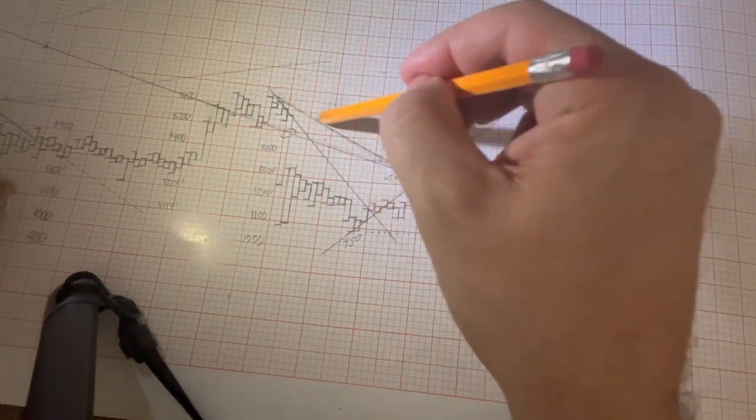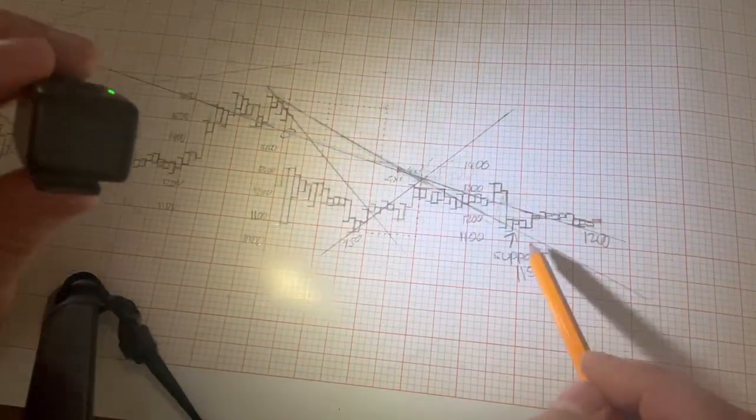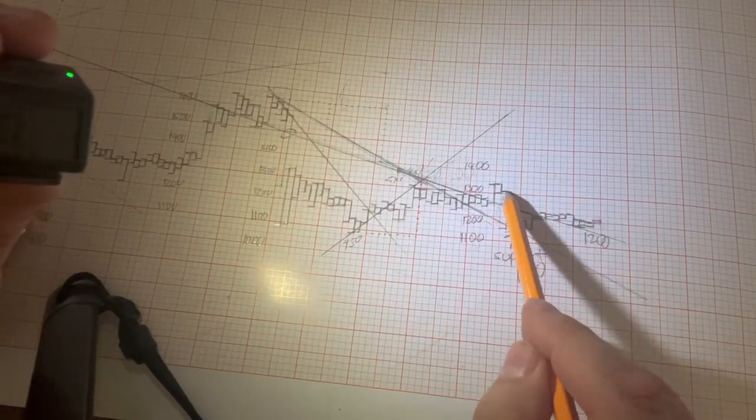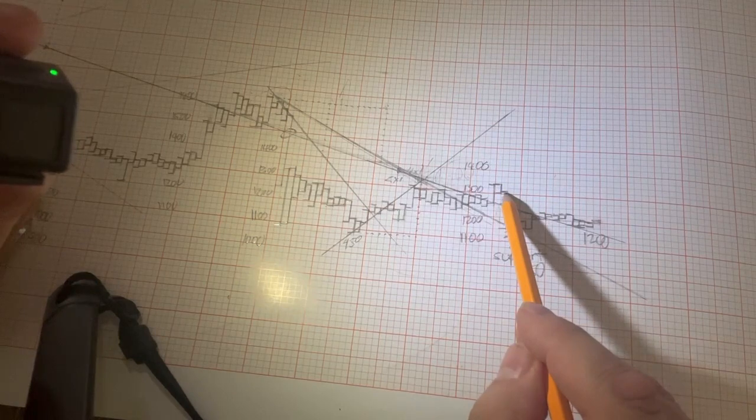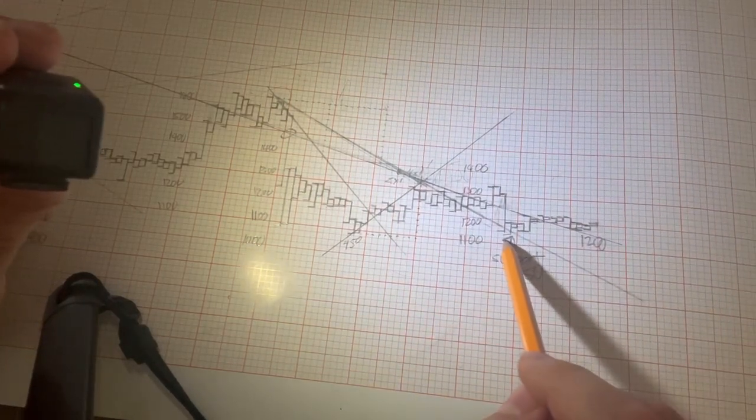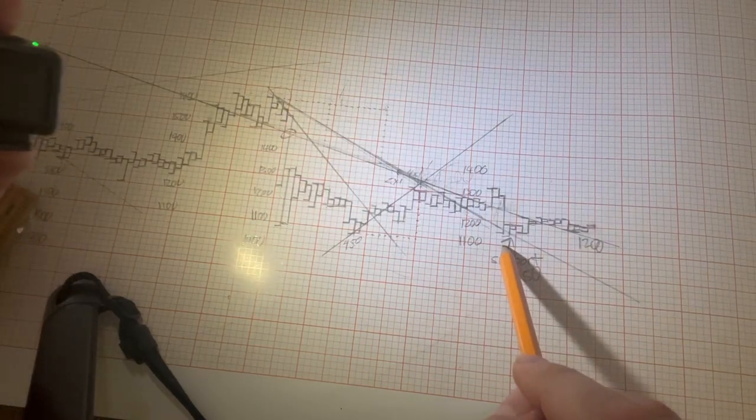And then I connect the points, and lo and behold, what do I get? I get support at $1,150. So there was a big drop in ETH from $1,300 to $1,150, and what do you know? It stopped right on this really important Gann line.